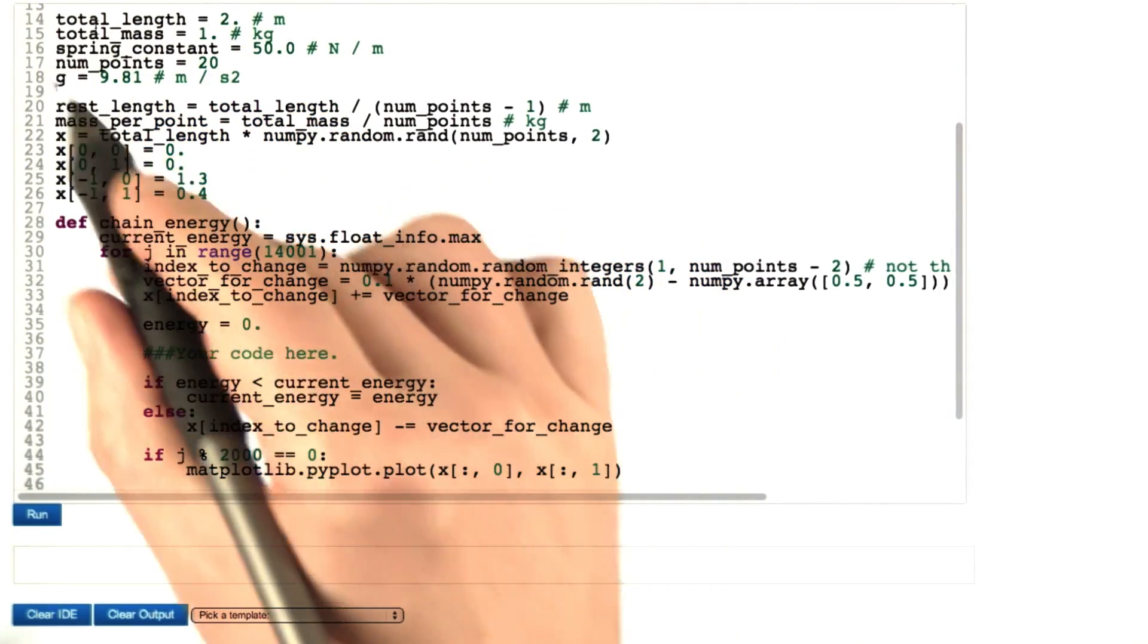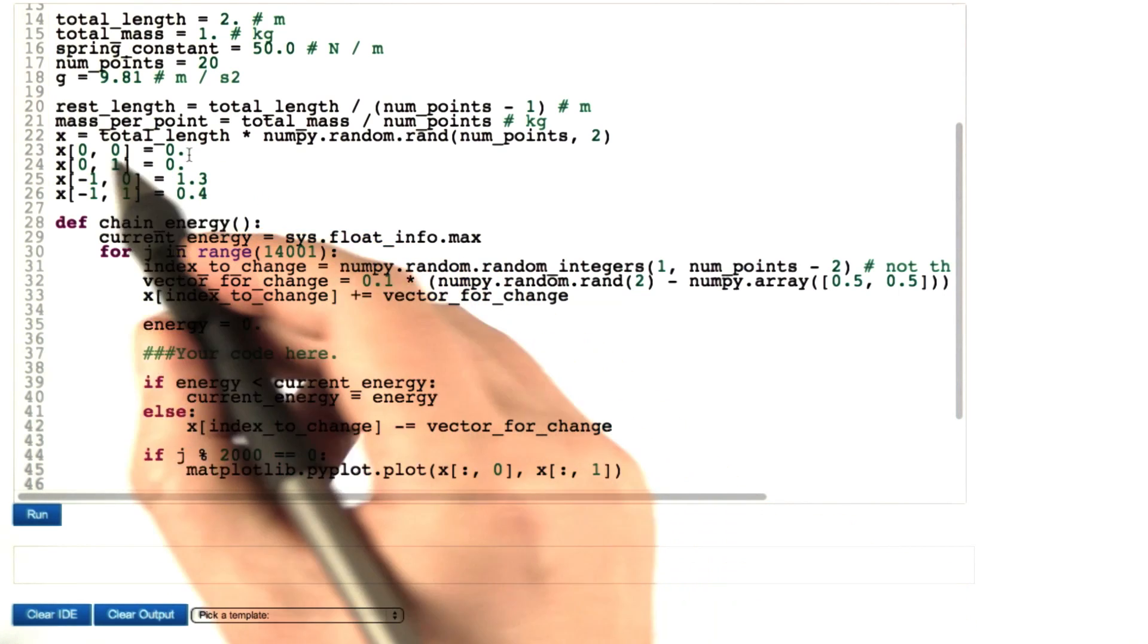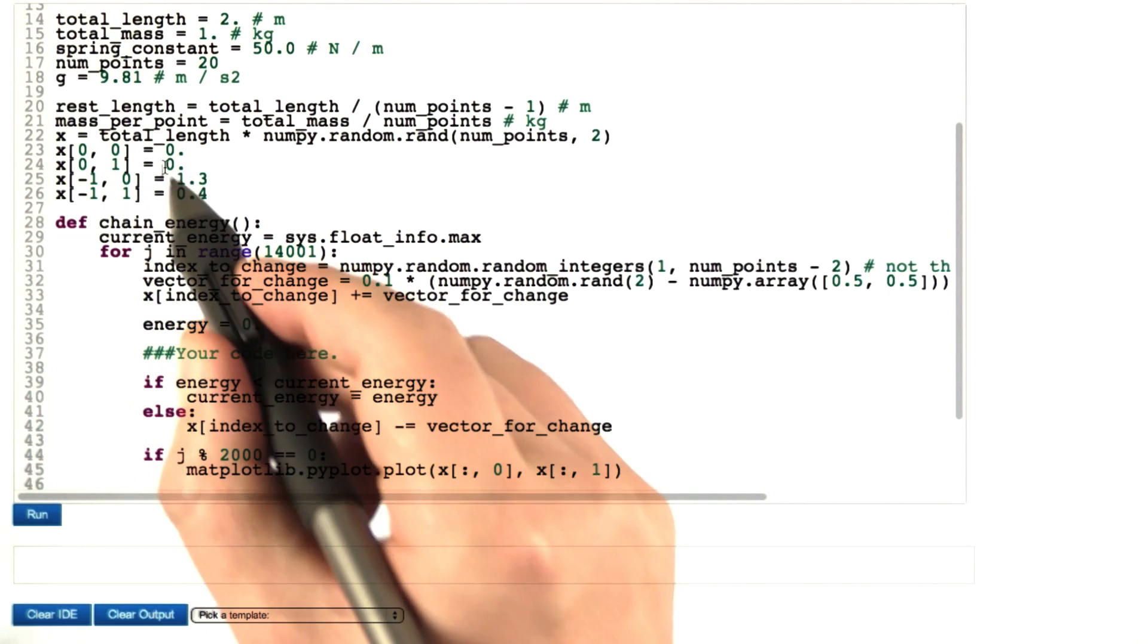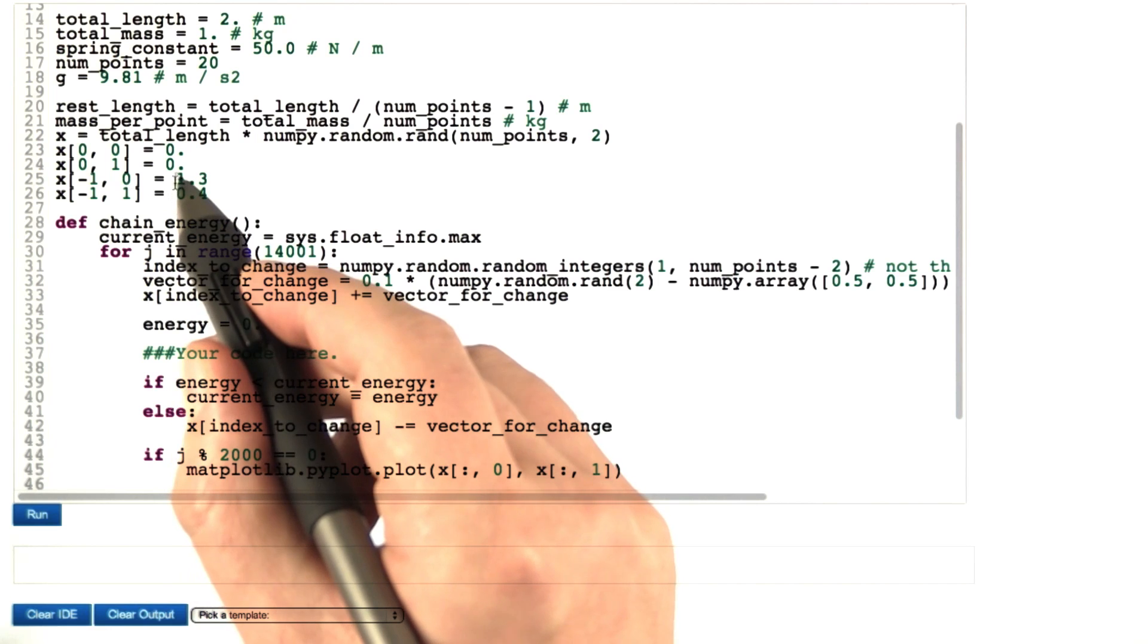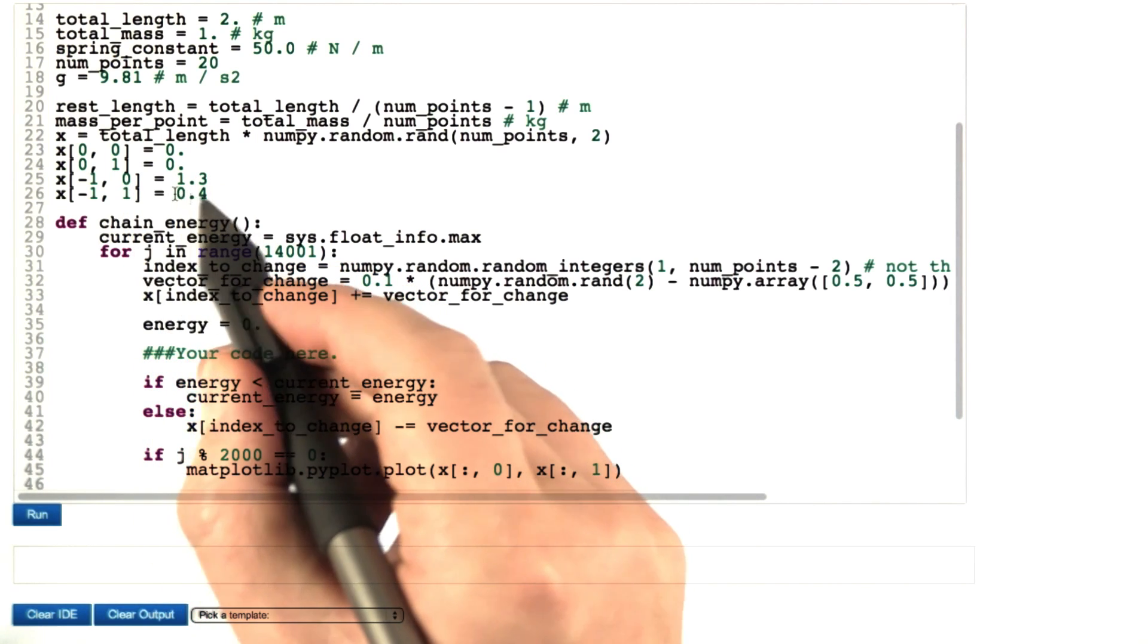Given the constants that we provide, compute the potential energy of that rope. The one end of that rope will be fixed at x equals zero, y equals zero. The other end of that rope will be fixed at x equals 1.3 meters and y equals 0.4 meters.